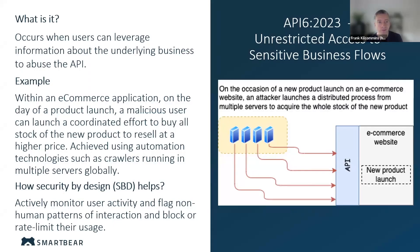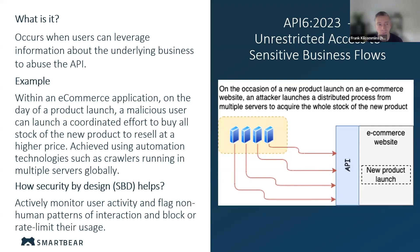The next one we have is unrestricted access to sensitive business flow. This is an interesting new addition to the list this year. It really occurs when users or bad actors can leverage information about underlying business flows or business information to basically misuse or abuse the API.